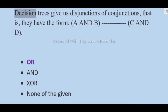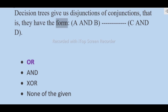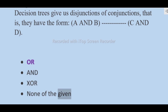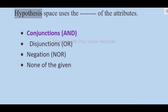Decision trees give us disjunctions of conjunctions; that is, they have the form (A and B) or (C and D) or ... (X and ...) or none of the given. The hypothesis space uses conjunctions of the attributes.